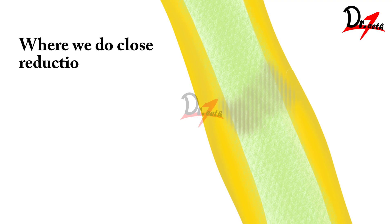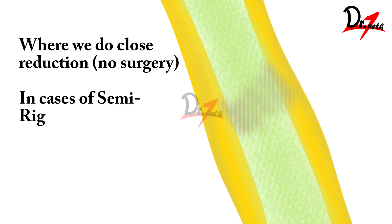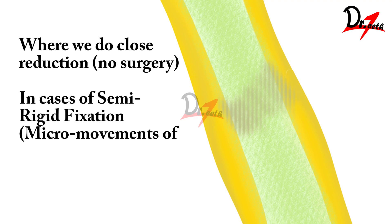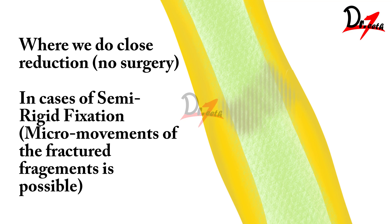Secondary healing occurs where there is usually no surgical intervention, or in cases of semi-rigid fixation. In semi-rigid fixation, the fragments are still slightly mobile, and in those cases secondary healing happens.